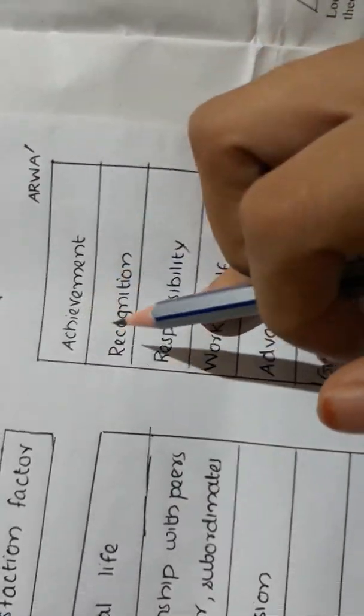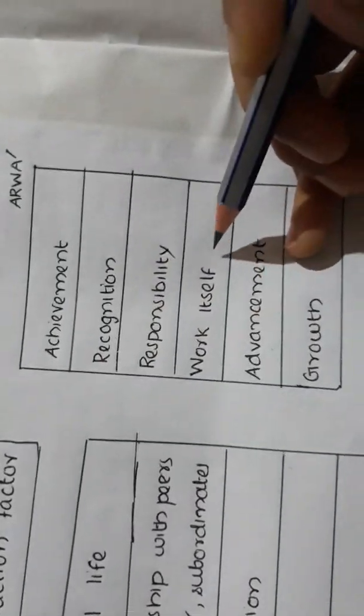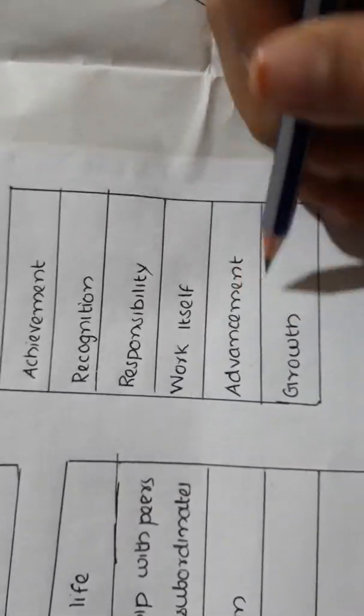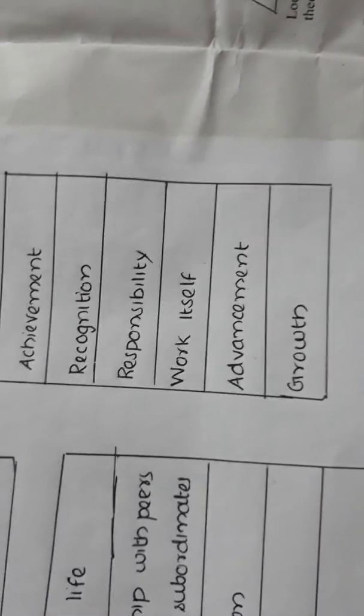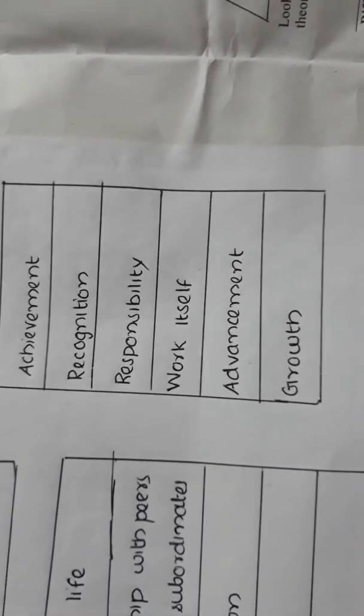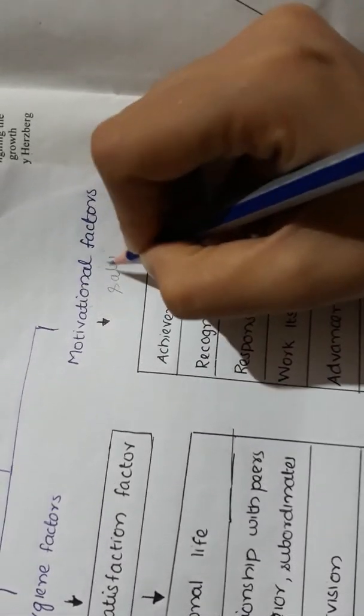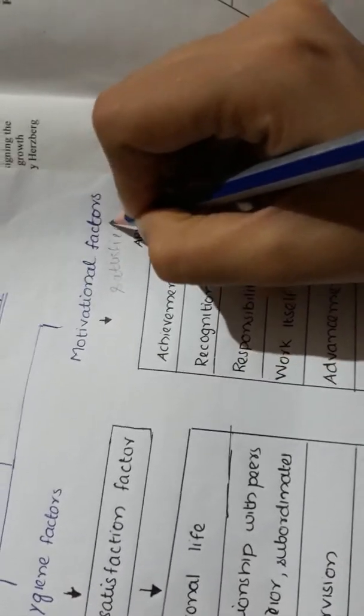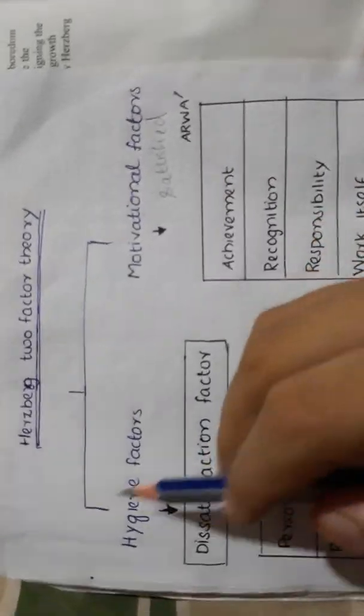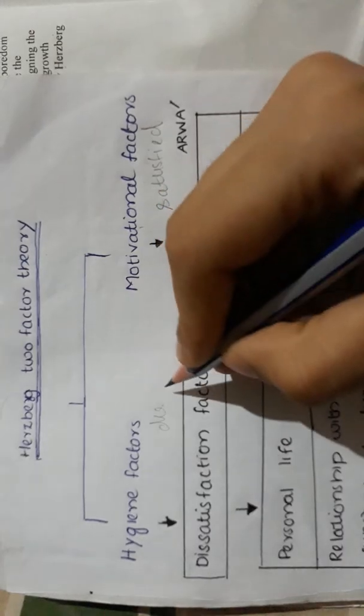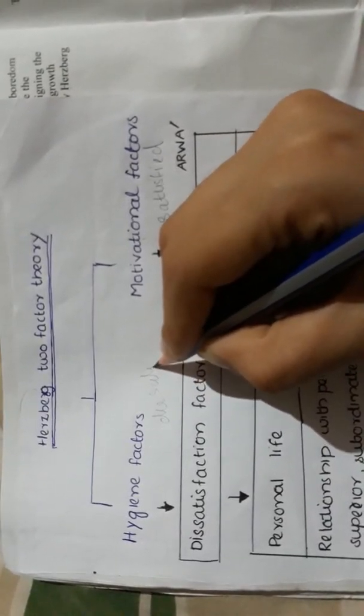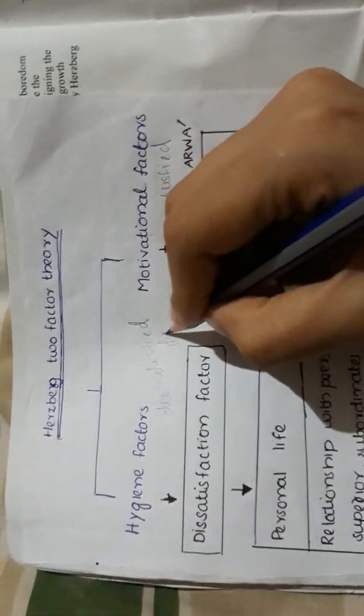So the factors are achievement, recognition, responsibility, work itself, advancement, and growth. If you are working in an organization and you are happy with these factors, these are satisfied factors or motivational factors. The second factor is hygiene factors and dissatisfied factors.